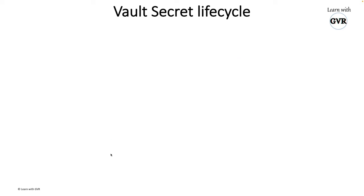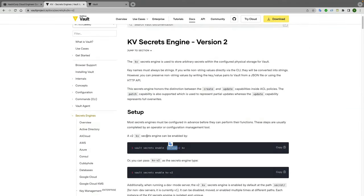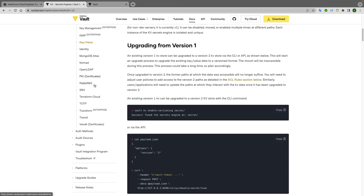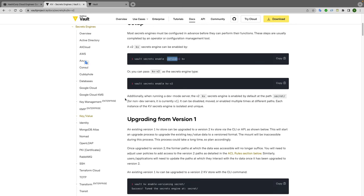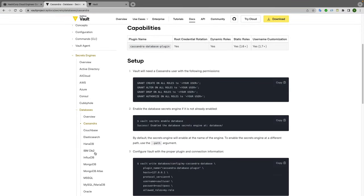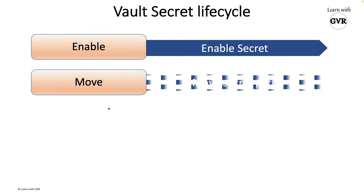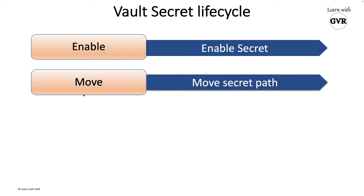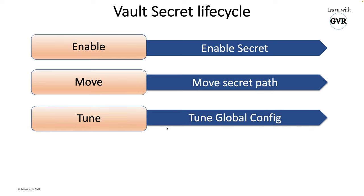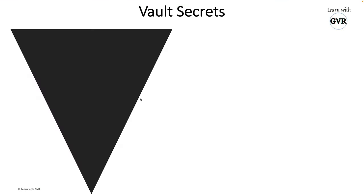Now, the secret lifecycle. To use a secret engine in Vault, you first have to enable it. For example, if you want to create a key-value pair, you have to enable it first. If you want to store database credentials, you have to enable the database engine first — for instance, 'vault secrets enable database'. After enabling, you can move secrets between various paths, fine-tune the configuration, and disable the engine if you no longer need it. This is the typical lifecycle available in the official documentation.